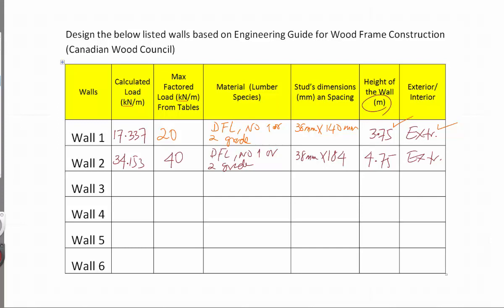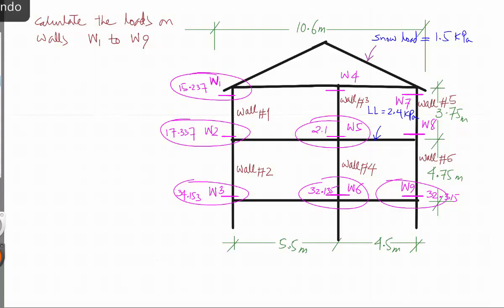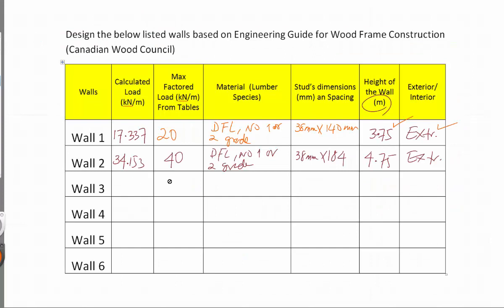Now let's look at the interior walls. For wall 3, it is an interior wall with a height of 3.75 meters and a load of 2.1 kilonewtons per meter.